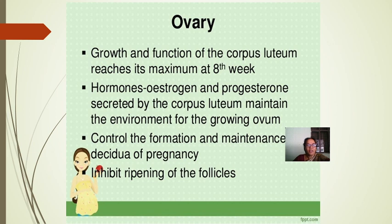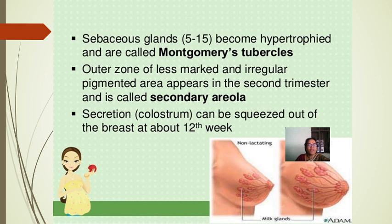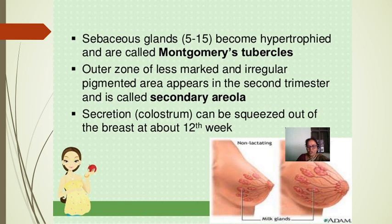Breast changes: there is marked hypertrophy and proliferation of the ducts under the influence of estrogen and progesterone, and vascularity increases. The nipples become larger, erectile, and deeply pigmented. Sebaceous glands hypertrophy to form Montgomery's tubercles. In the second trimester, an outer zone of less marked and irregularly pigmented area appears called the secondary areola — more visible in primigravida. Colostrum can be squeezed out at about 12 weeks of gestation.